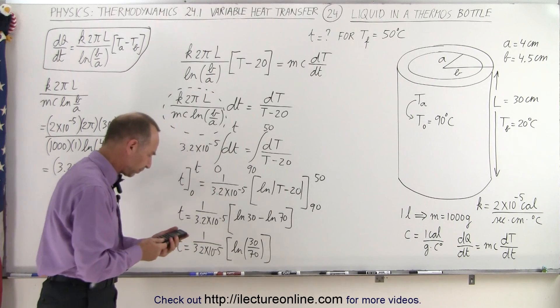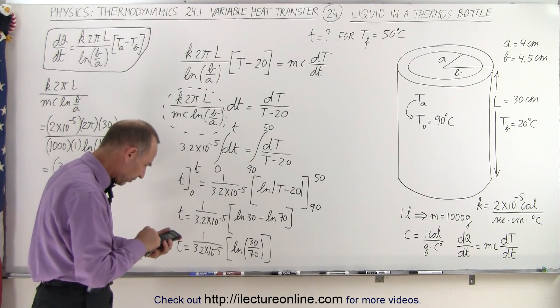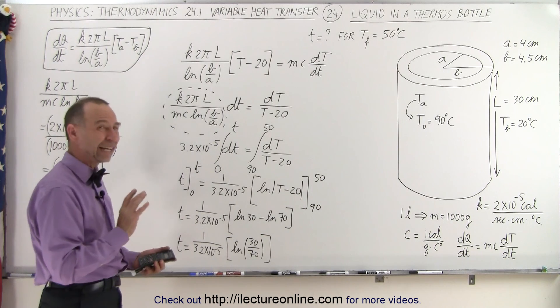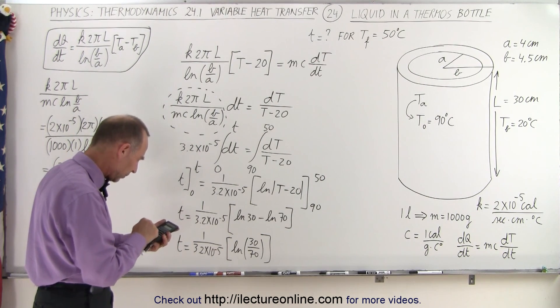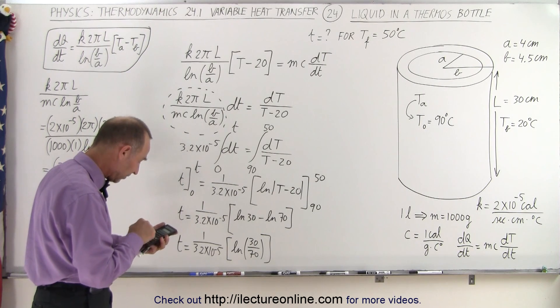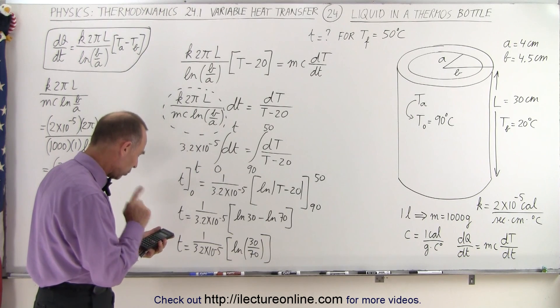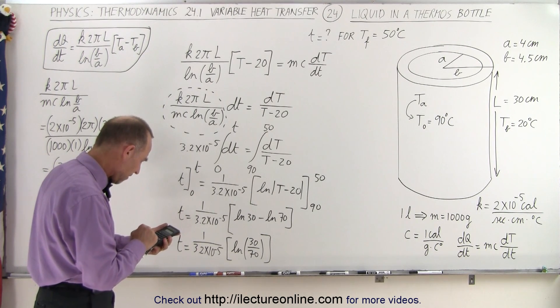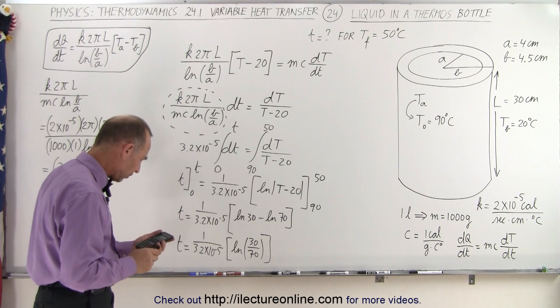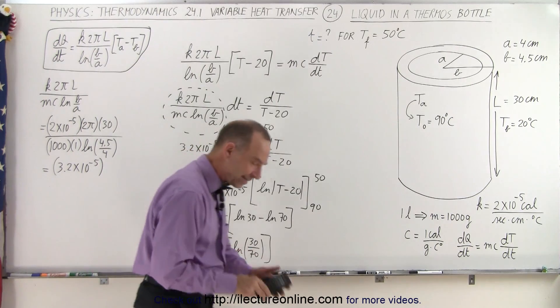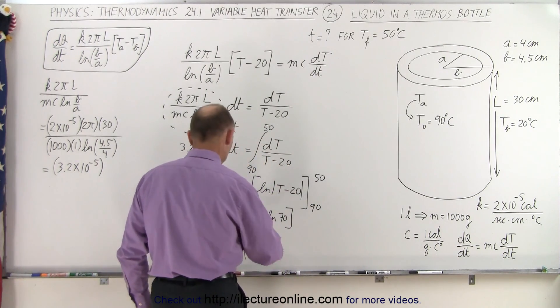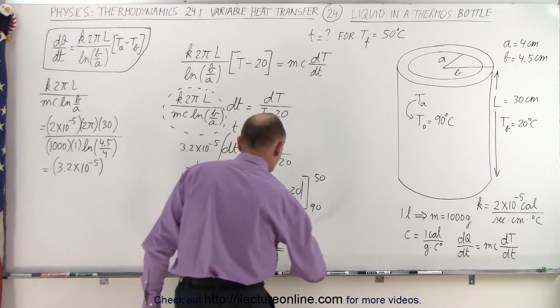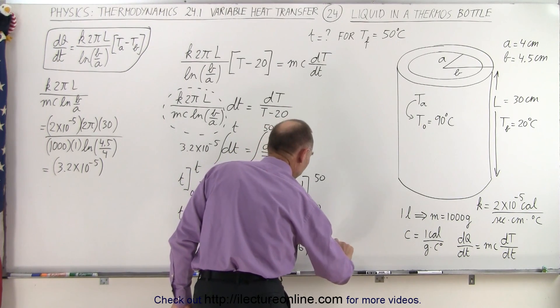And where's my calculator? Right here. So take the inverse of that, and now we multiply that times 3 divided by 7. I don't think that went quite well. Let me try it again. So 3 divided by 7, take the natural log of that and then divide that by 3.2 times 10 to the minus 5. And that gives us a period of 26,478 seconds. So we're going to take the absolute value of that, and that gives us 26,478. Of course, that would be in seconds.